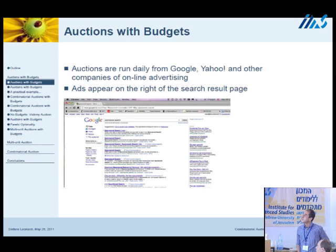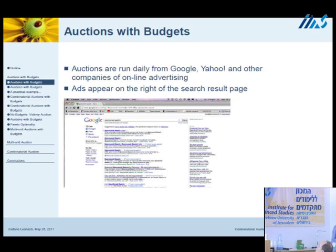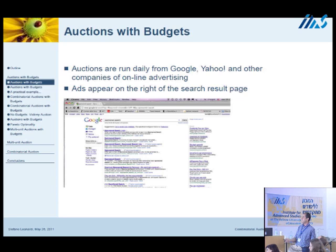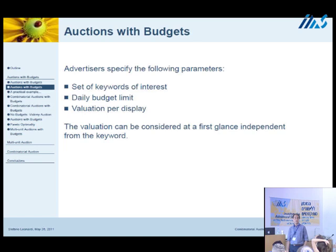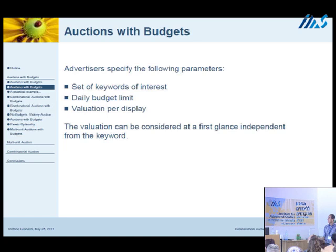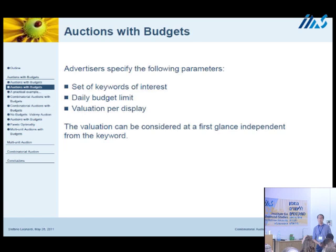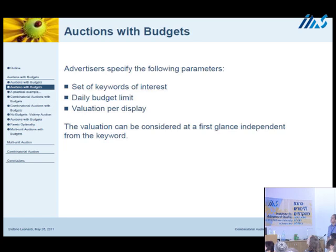We are motivated from auctioning web ads, which appear on the right side of the search engine result page. Posting web ads is the result of an auction where the main parameters are: advertisers specify a set of keywords of interest, a daily budget limit — the maximum amount of money the advertiser is willing to pay — and a per-display valuation, so every time the ad is displayed they receive a per-unit valuation. We assume the valuation is independent from the keyword where the ad will be displayed.